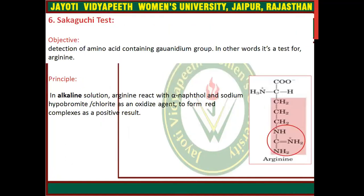Next is the Sakaguchi test, which is used for detection of amino acids containing a guanidium group — in other words, it is a test for arginine. In alkaline solution, arginine reacts with alpha-naphthol and sodium hypobromite as an oxidizing agent to form red complexes as a positive result.